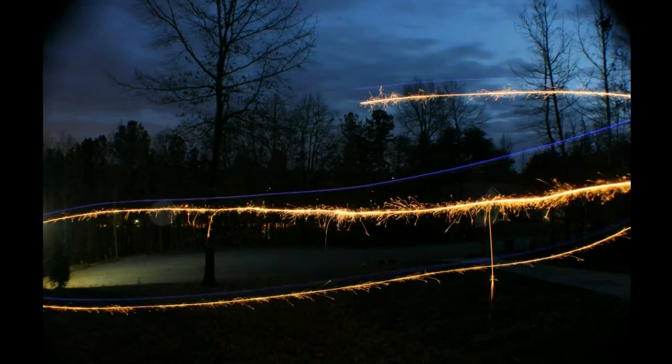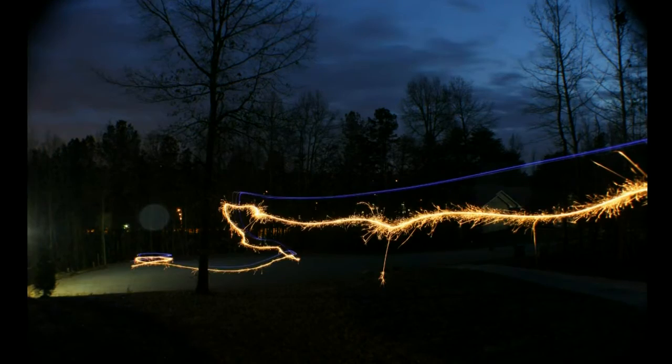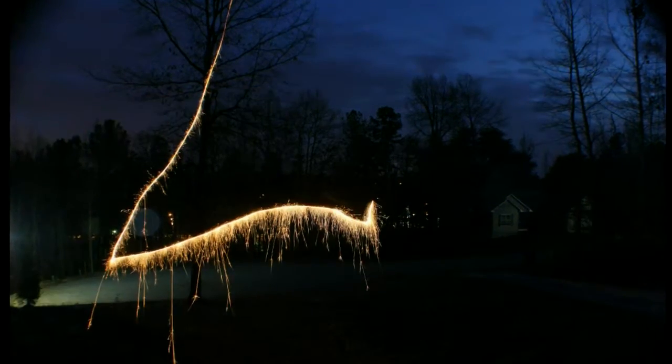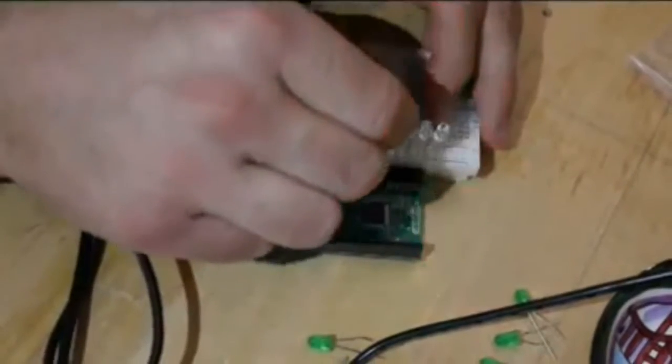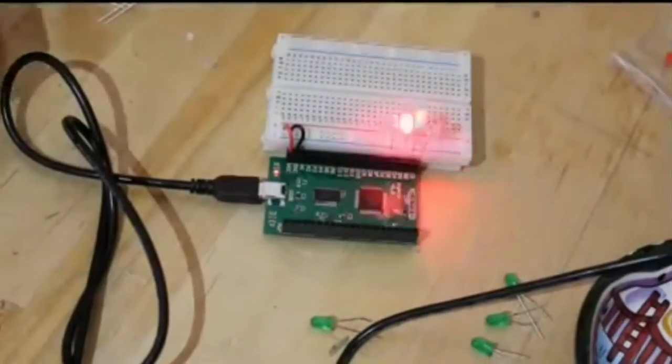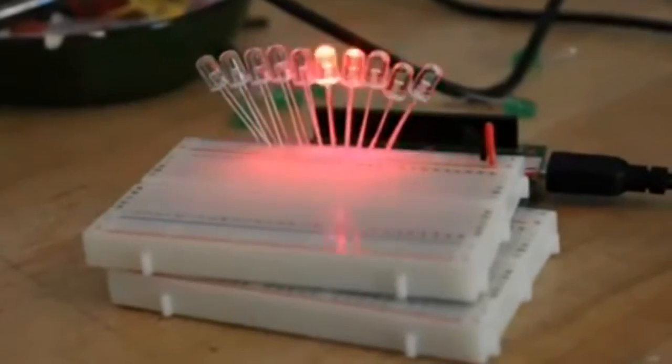Not content with those results, I decided to automate my light graffiti process even more with something called a Pi MCU. This board can light up LEDs in sequence, sort of like an Arduino. After some image processing, I was able to make a fixture that allowed me to make an image by pulling the LEDs along at a steady rate. The LEDs would blink in sequence, spelling out or drawing whatever I had in mind.